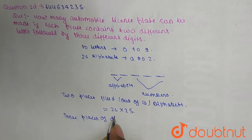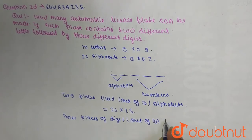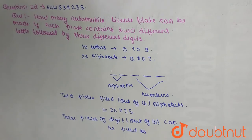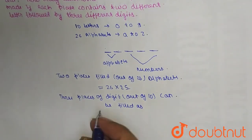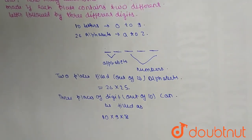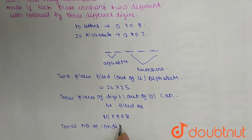Now, three places for digits out of 10 can be filled as follows: for the first digit there are 10 choices, for the second there are 9, and for the third there are 8, since all digits must be different.